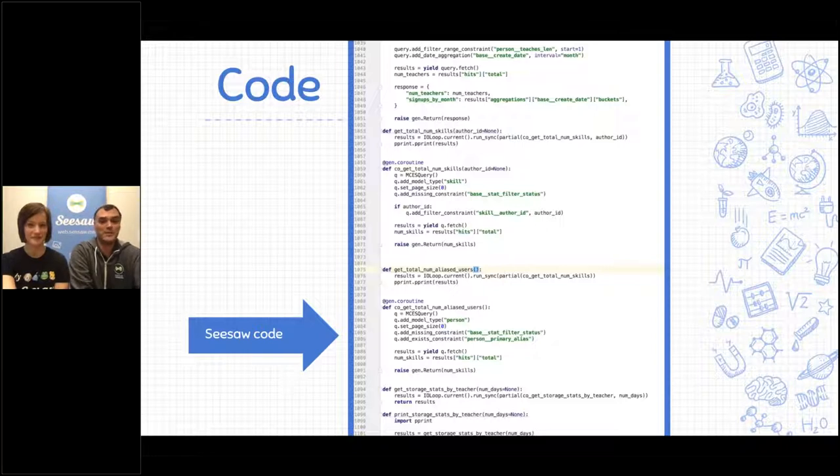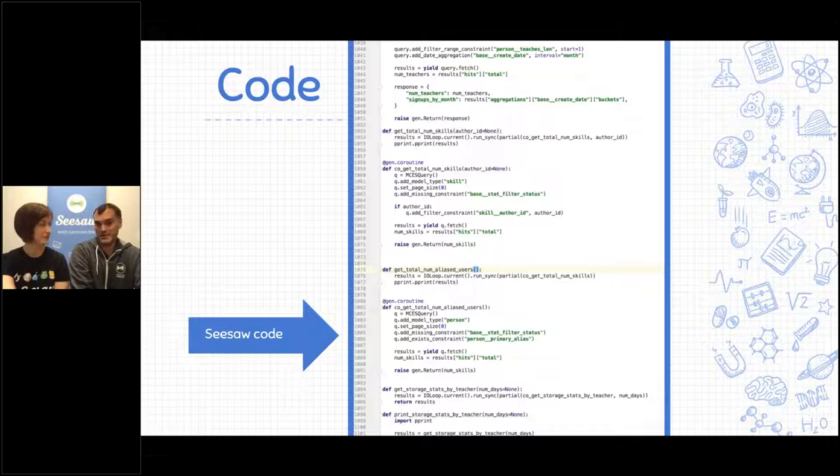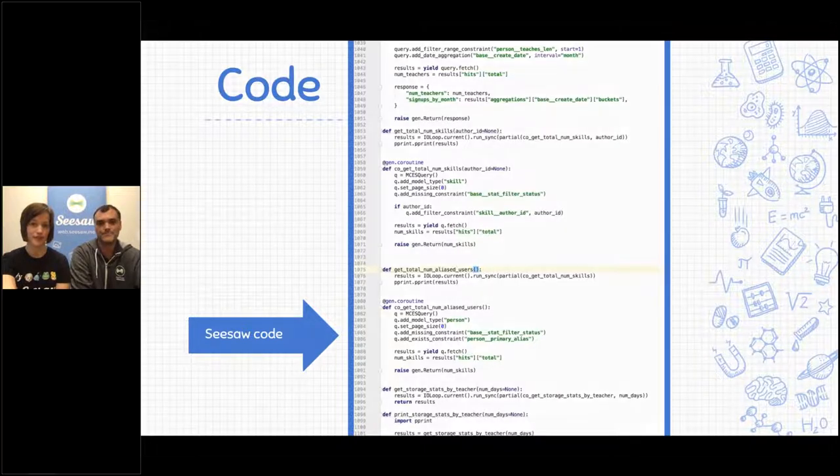So the way you tell computers what to do is you write code. This is an example of some code in Seesaw. And it's basically computers are kind of dumb in a weird way. Like they do exactly what you tell them to do and that and only that. And so writing code is the process of being very specific about where you want a button to go on the screen, what should happen when you click on it. Exactly.